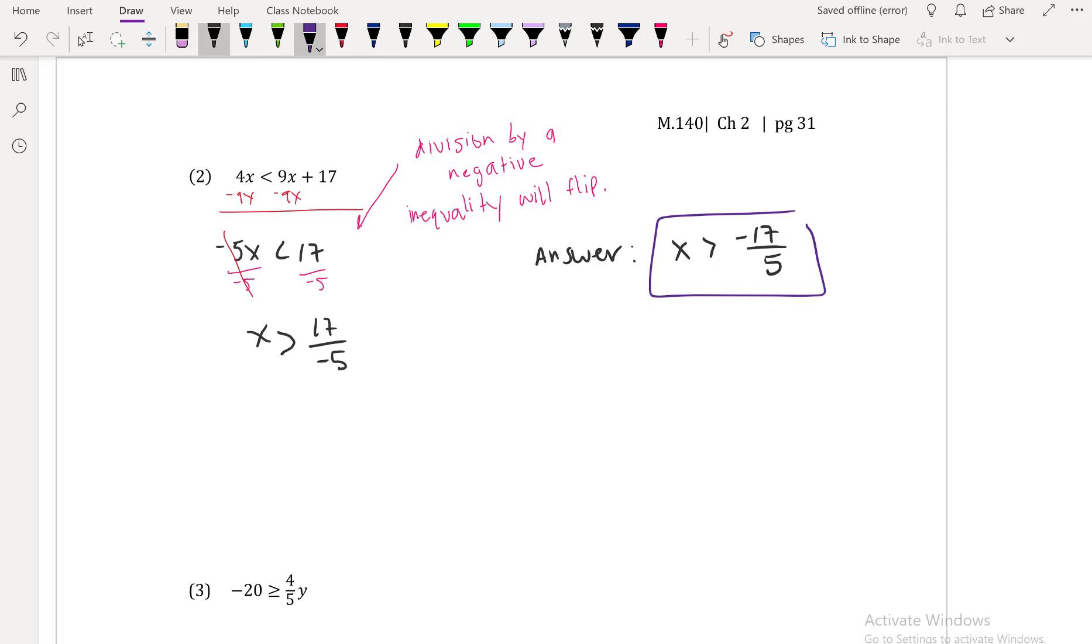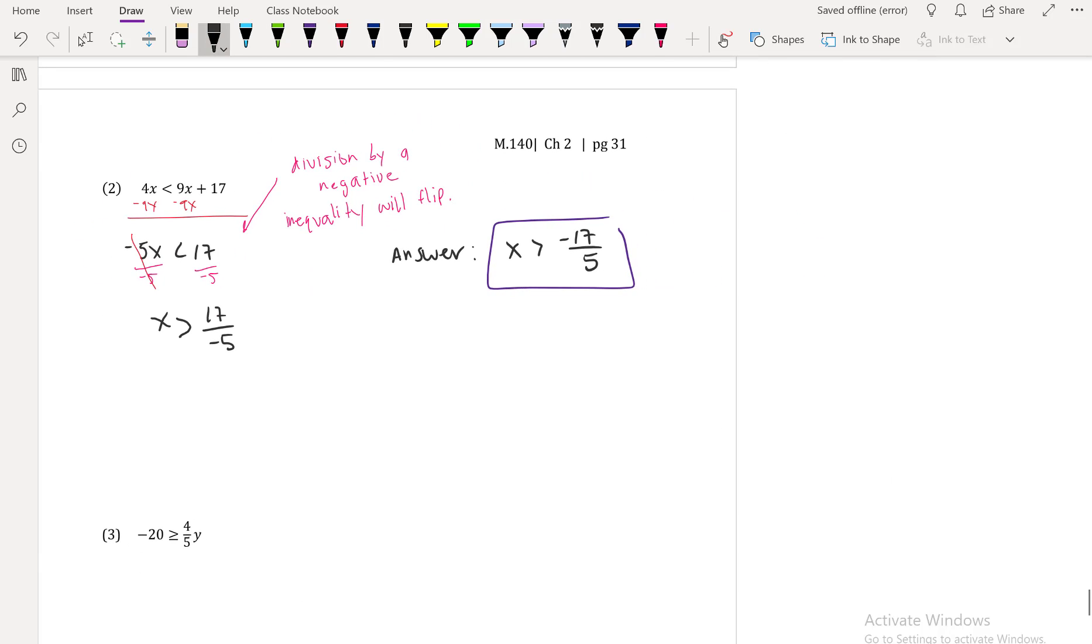And just because I usually get this question a lot, I'll write it over here: negative 17 over 5 is the same as 17 over negative 5, which is same as negative 17 fifths. Here, it just means that the fraction is negative. It does not matter where that negative sign lives, whether it's in the numerator, the denominator, or over to the side. It all represents the same. Personally, I like to have it in my numerator. That way, I'm less likely to make a mistake.